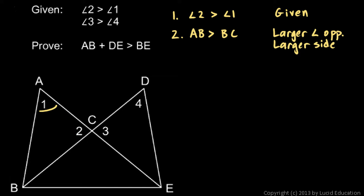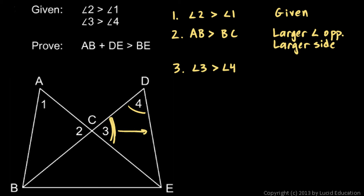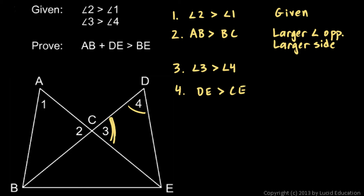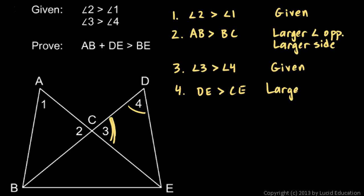Applying the same reasoning on the right side: angle 3 is greater than angle 4 — that's given. So that means the side opposite angle 3, DE, must be larger than the side opposite angle 4, CE. DE is larger than CE. The reason is the same: the larger angle is opposite the larger side.